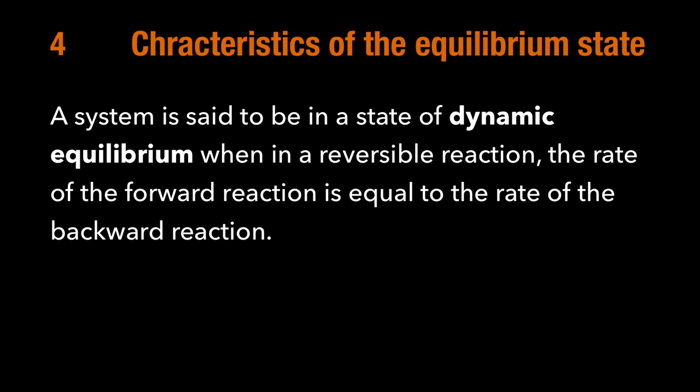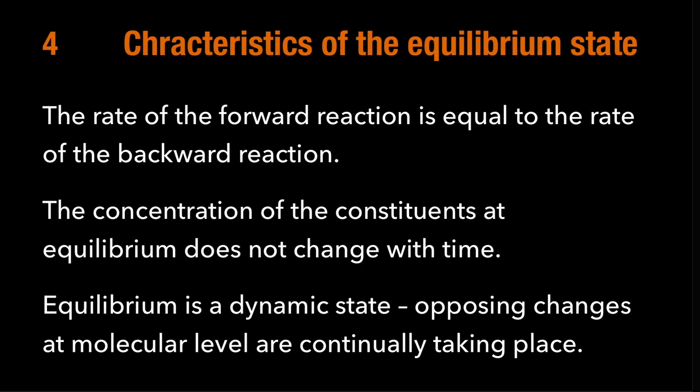Yesterday we were discussing what an equilibrium is and how reactions try to achieve an equilibrium state. Once we reach equilibrium, we know a few things. By definition, it is called a dynamic equilibrium because the reaction doesn't stop — it's just that the rate at which the reaction goes forward and backward is equal. So the rate of the forward and backward reactions are equal. That's the first property.